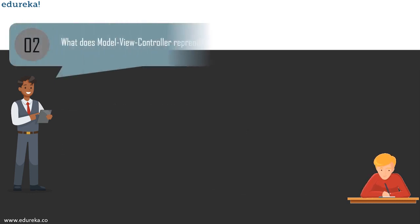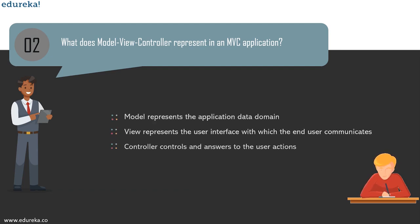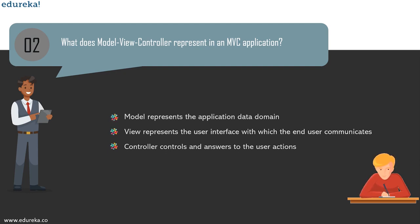The next question is: what does Model, View, and Controller represent in an MVC application? The Model represents the application data domain — the business logic is contained within the model and is responsible for maintaining the data. The View represents the user interface through which end users communicate — all user interface logic is contained within the view. The Controller responds to user actions — the respective controller responds within the model and chooses a view to render the UI. User input logic is contained within the controller.